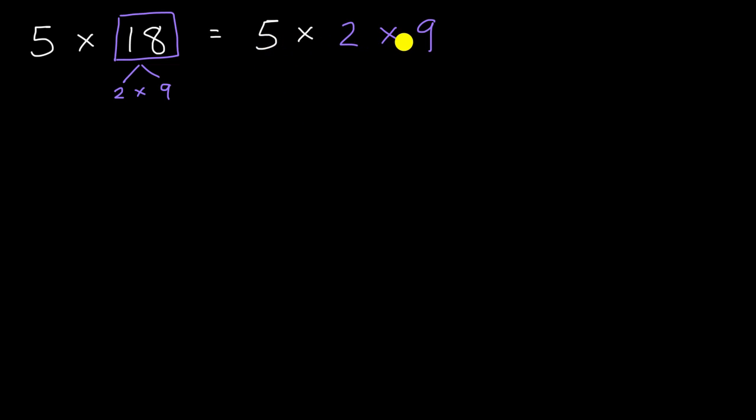If you are multiplying a string of numbers, you can do them in any order that you choose. And so this is often known as the associative property of multiplication. We can associate the 2 with the 9 first. We can multiply those first. Or we can have an association with the 5 and the 2. We can multiply those two first.